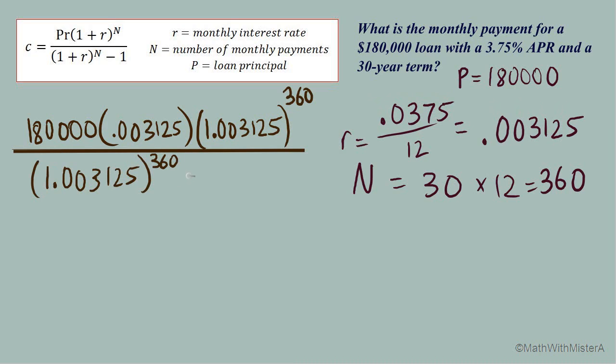So we're sticking to order of operations, let's do these exponents first. 1.003125 to the power of 360 and I get a result that's about 3.07.